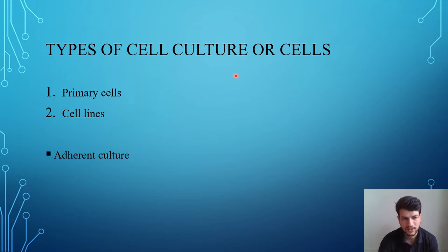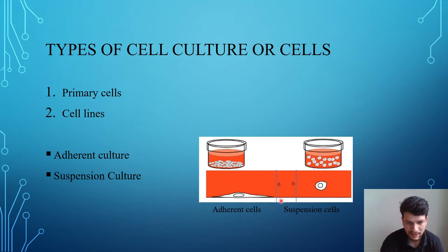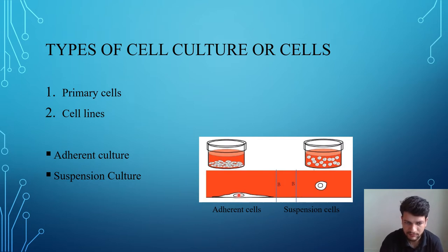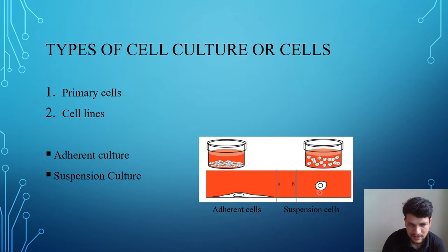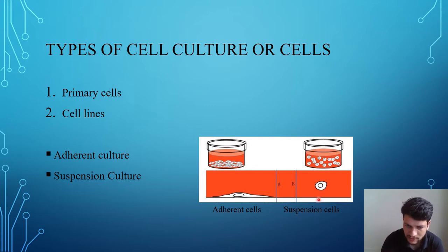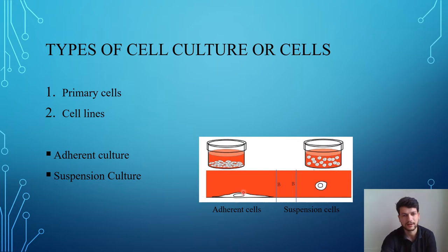Primary cells and cell lines may be of two types: adherent cells or suspension cells. Adherent cells adhere to the bottom of the flask — even if you remove the media or tilt the flask, they will not be removed. Some types of cells do not have the property to adhere; these are suspension cells. Blood cells, for example, grow in suspension, while most cell types grow as adherent cultures.